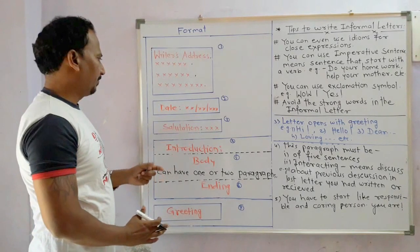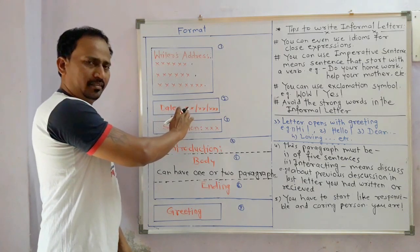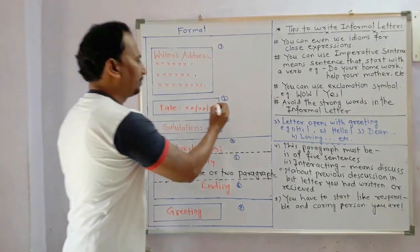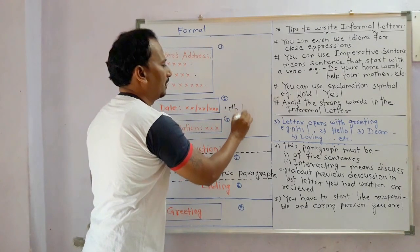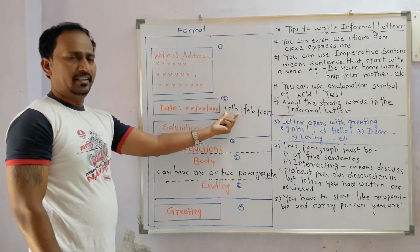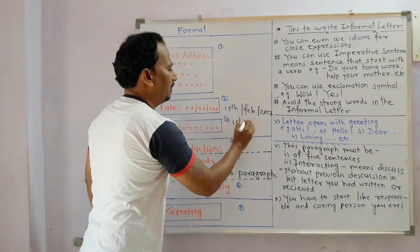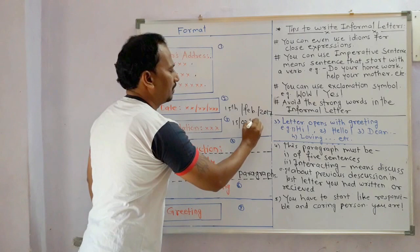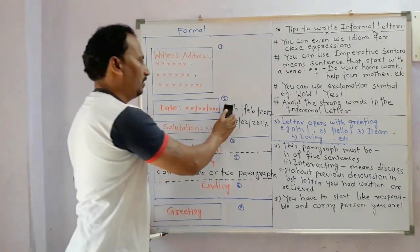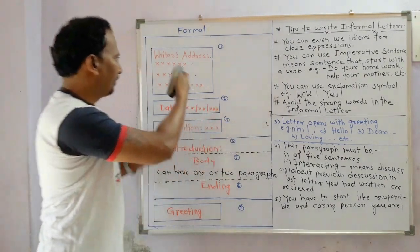Under the address, at the same level, you have to write the date. The date should be written as: day, month, and year. For example, 15th February 2007 — date, month, and year. The same date we can also write as 15th 2007 in a short form. In this way we can write the date under the writer's address.